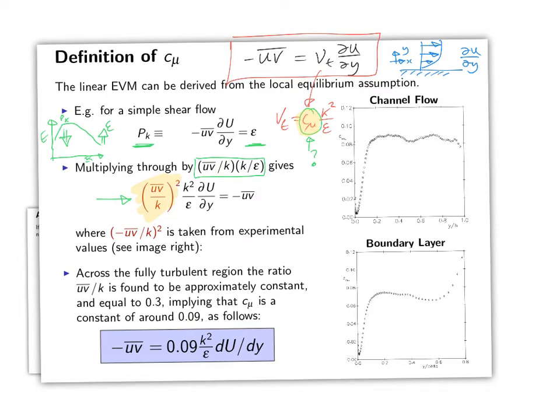And so really what we do then is we use experimental data of a channel flow and of a boundary layer, and we compute this quantity (uv/k)^2 which we can get from turbulent statistics. We find that over quite a large portion of the channel flow or the boundary layer it has a constant value, and moreover we can work out what this constant value is. We can see that here it's more or less 0.09, here it's slightly lower possibly 0.07, but this allows us to calibrate our model. In this way, the standard value for C_mu that's used most of the time in turbulence modeling is found to be 0.09.